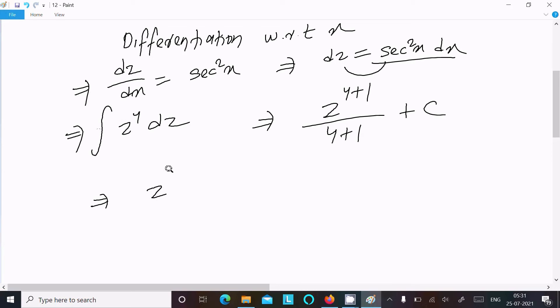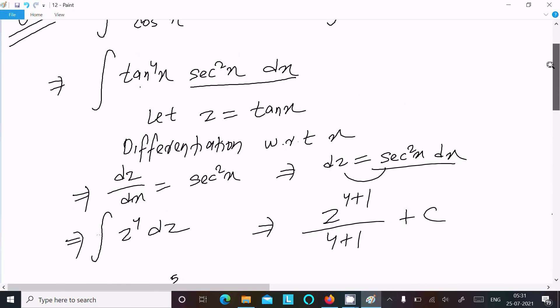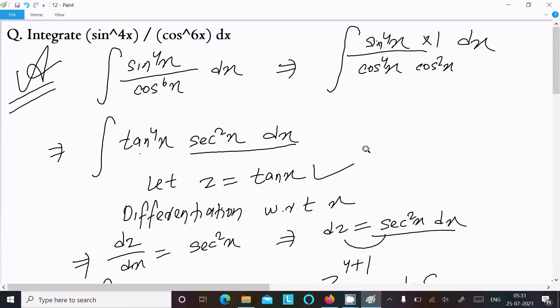Then you can get z⁵ divided by 5. And c is the constant. And here I assume z equal to tan x.